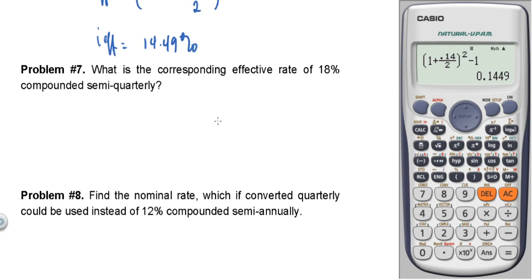Problem number seven: What is the corresponding effective rate of 18% compounded semi-quarterly? You just need to think about how many periods semi-quarterly means. Similarly, for bi-monthly, you need to determine the number of periods.